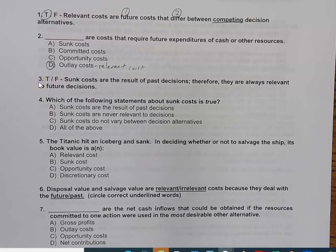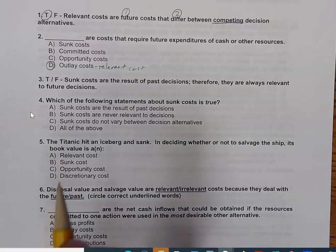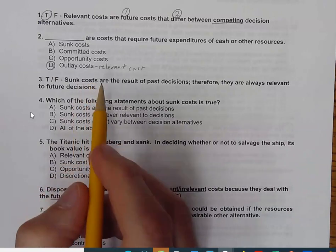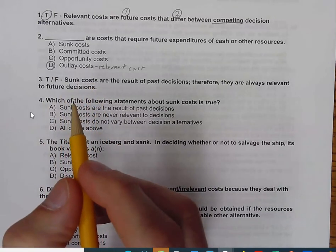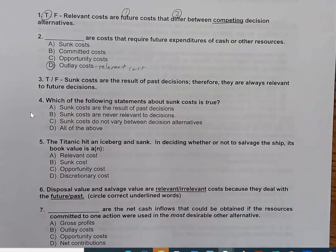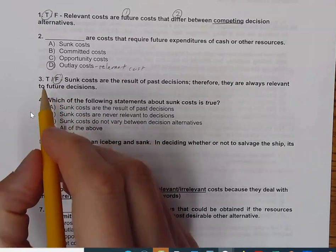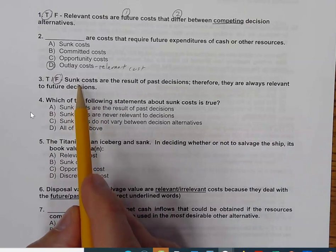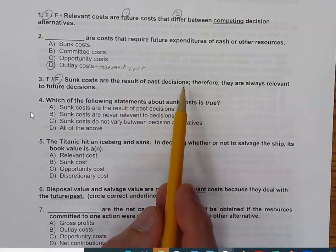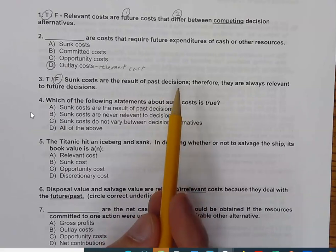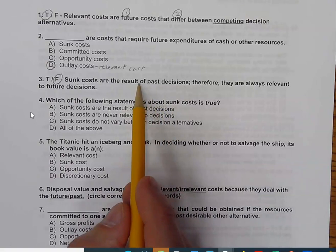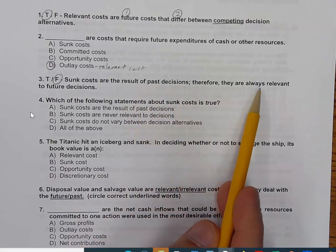Question 3 is another true-false, and it says sunk costs are the result of past decisions. Therefore, they are always relevant to future decisions. So, hopefully, we've done some review and we know what sunk costs are. I'm going to tell you what the answer is, and then I'm going to tell you why it's the answer. Our answer here is false, but I want to point out that the first part of our comment here where it says sunk costs are the result of past decisions, this is absolutely true. However, because it's true and because they're the result of past decisions, they're always irrelevant.